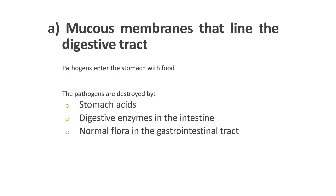The first example is the mucous membrane at the digestive tract. Once a pathogen enters the stomach through food, it may be killed by the stomach acids, the digestive enzymes in the intestine, and the normal flora in the gastrointestinal tract. The stomach itself provides an acidic environment with a pH of 2 that kills most pathogens before they can enter the intestine.